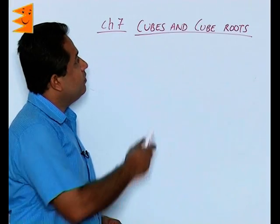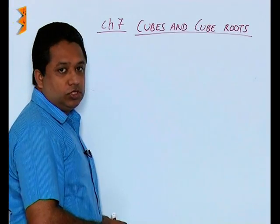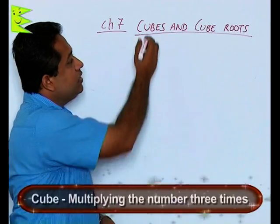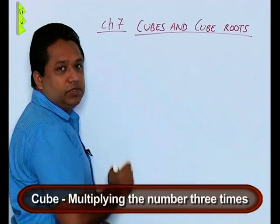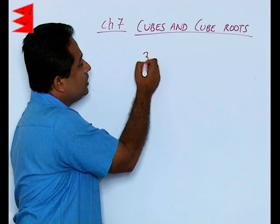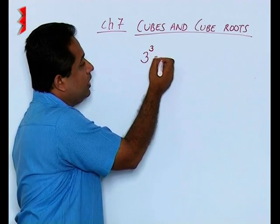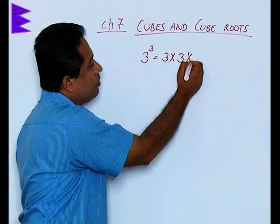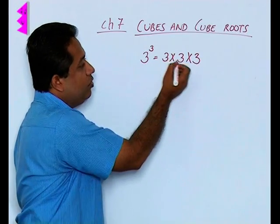The next chapter we have cubes and cube roots. Now cubes means multiplying the number three times. So if you are asked what is three cube, it indicates three multiplied by three multiplied by 3. So 3 into 3 is 9, 9 into 3 we get 27.